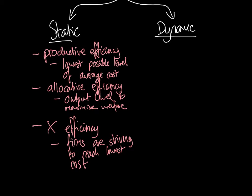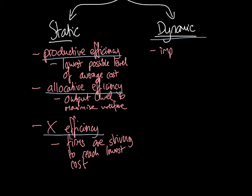So there are four types of efficiency overall to consider: three static efficiencies — productive efficiency, allocative efficiency, and X-efficiency — and dynamic efficiency, which is improved efficiency over time.